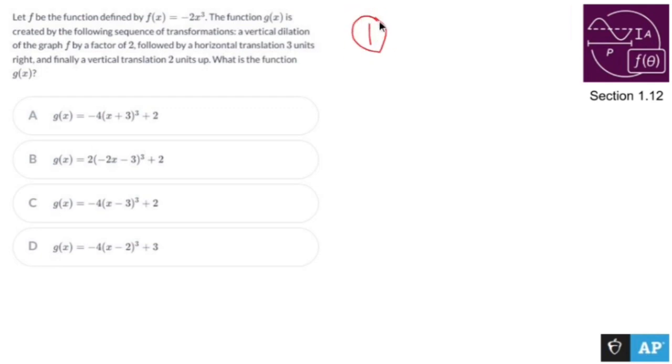Step number one: a vertical dilation of the graph of f by a factor of two. This means g(x) equals 2 times f(x). Vertical dilation has you multiply 2 to the entire thing. So what we get is 2 times f(x), which is 2 times -2x³, which equals -4x³. That's step one.